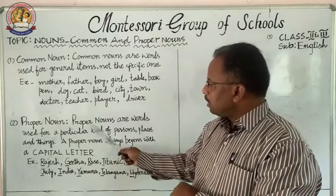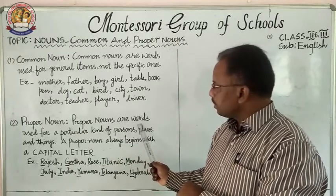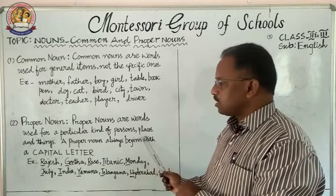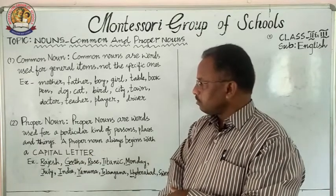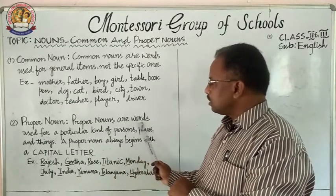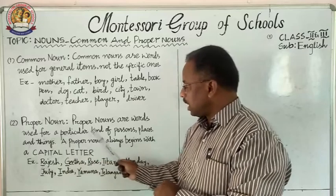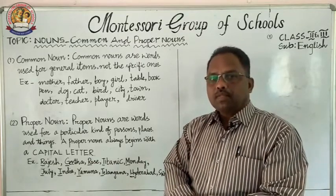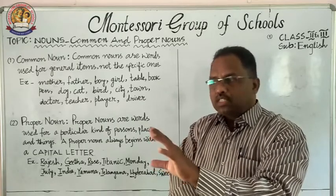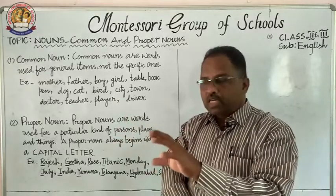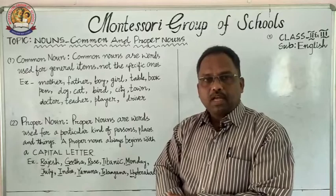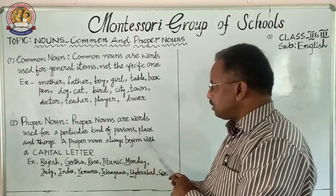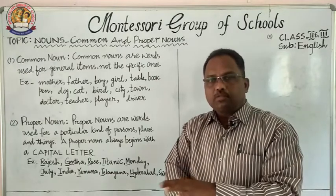Proper nouns are words used for a particular kind of person, place, or thing. It is used for a particular person, a particular place, or a particular thing. And a proper noun always begins with a capital letter.